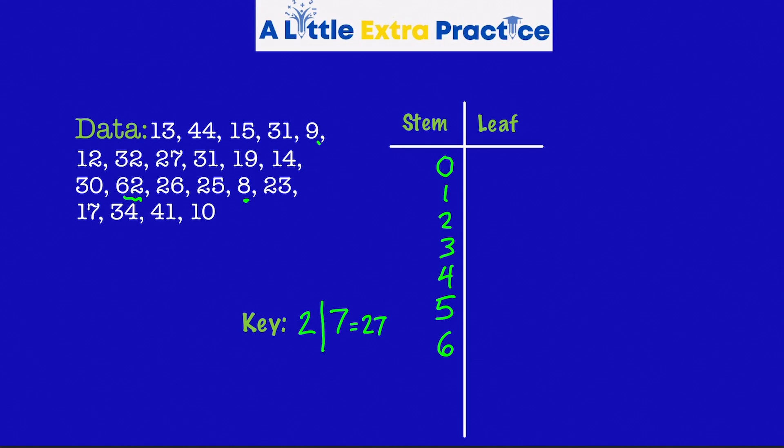Single-digit numbers. I have a 9. I have an 8. Sometimes you'll see commas there. I'm not going to put the commas in there because looking at the keys, this would be 0, 9, which is 9, 0, 8. It's not 98. You have to start at the stems. 0, 9, 0, 8. In the 10s, 13, 15, 12, 19, 14, 17, 10.